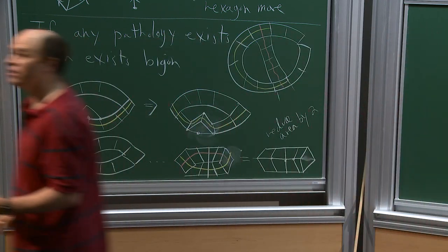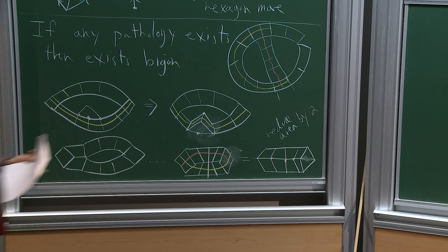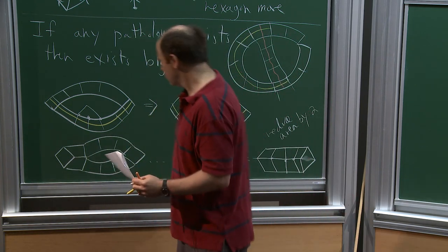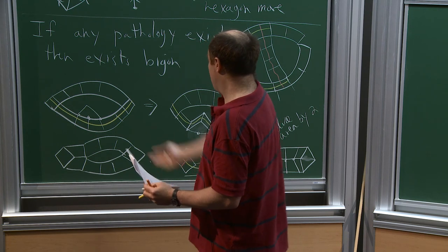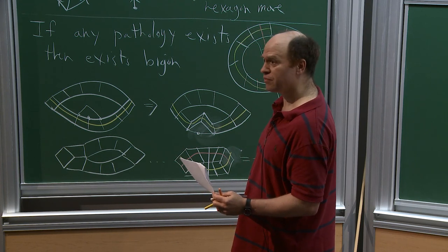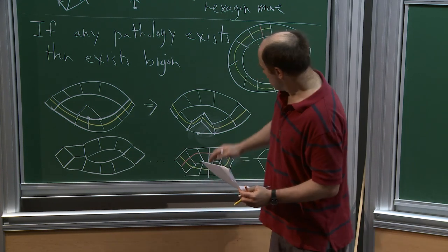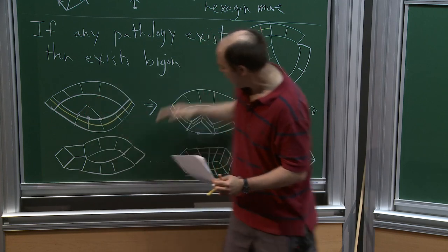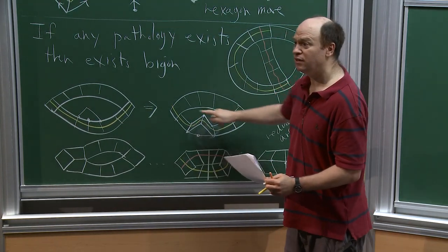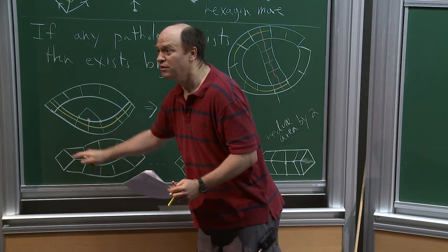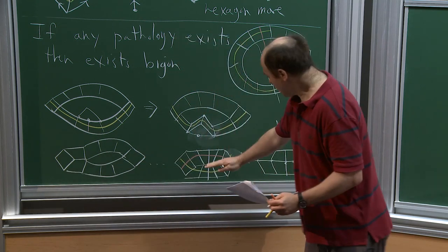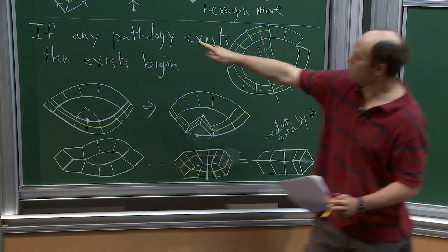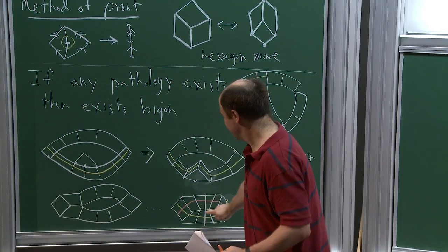A student asks how the first bigon configuration occurs. Well, it might have been that way to begin with. At the first stage of this process, you find squares that are hanging at the bottom and push them out until there's nothing left on the inside. Another way of thinking about it: you can keep doing hexagon moves until you've pushed one of these squares all the way over to the other square, and then you can remove the cancelable pair. You keep creating smaller and smaller bigons until at the last stage you can remove a pair of squares.